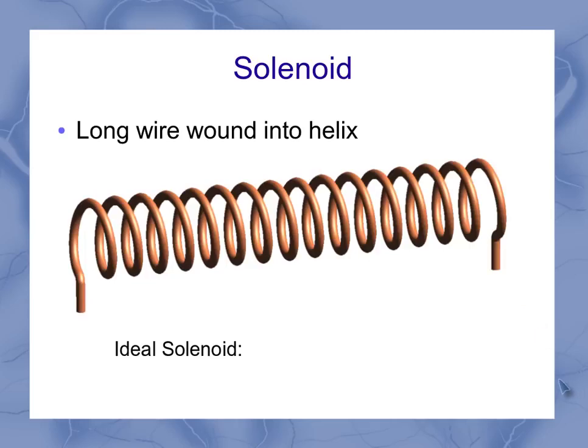If you hear something called an ideal solenoid, that means two things. One, the loops are close together, meaning there's not as much of a gap like shown here. And the overall length of the solenoid is much longer than the radius of the individual coils of the helix.